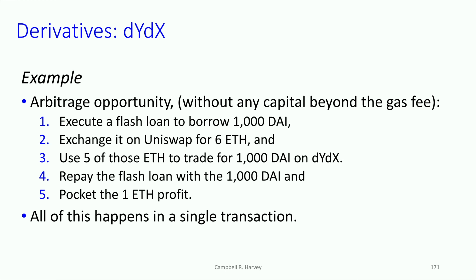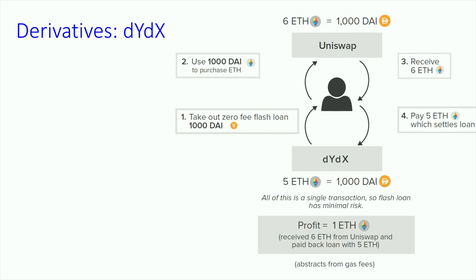Let's go through the mechanics of how we can actually make this work. I've got a diagram for this, but let me just say it first. What we're going to do is take a flash loan for 1,000 DAI, exchange it on Uniswap for 6 ETH, use 5 of the 6 ETH to trade for 1,000 DAI on DYDX, repay the flash loan with 1,000 DAI, and then we've got a profit of 1 ETH — all of this in a single transaction.